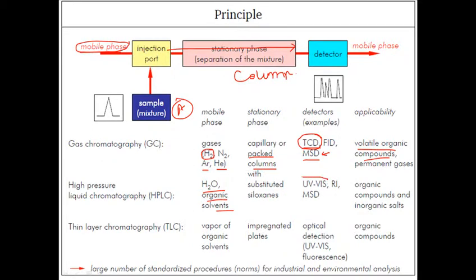The detectors used in HPLC are normally UV-visible spectrophotometers because they can identify and quantify the presence of organic compounds. You can also use MSD because it's a multi-purpose tool nowadays. We usually separate organic compounds and inorganic salts, especially amino acid sequences and proteins using HPLC.